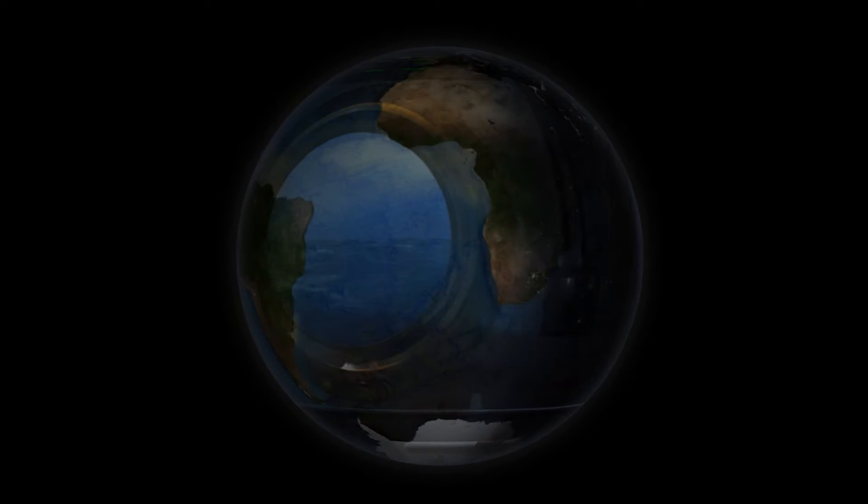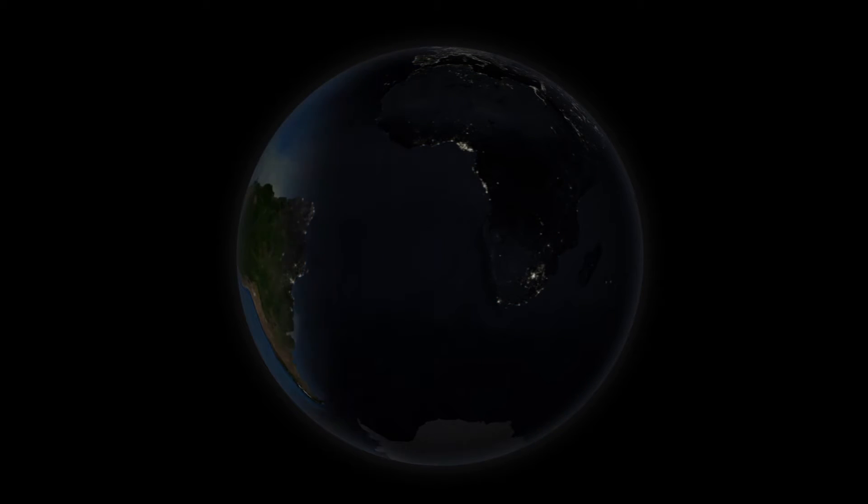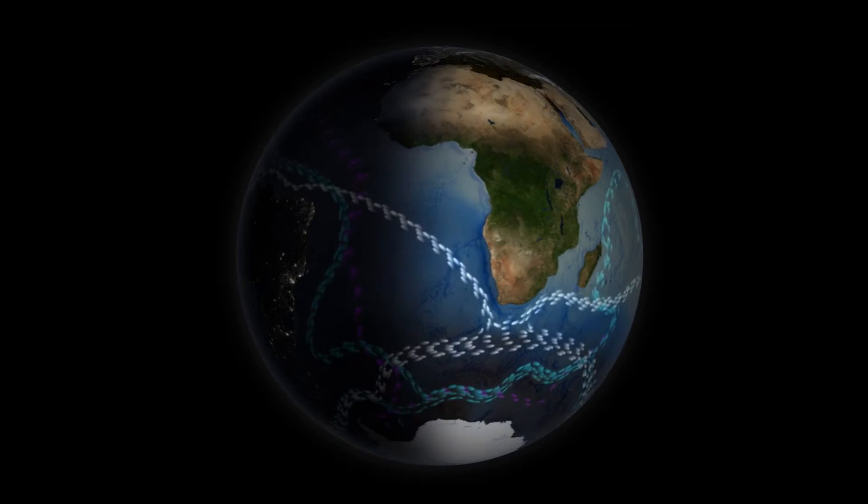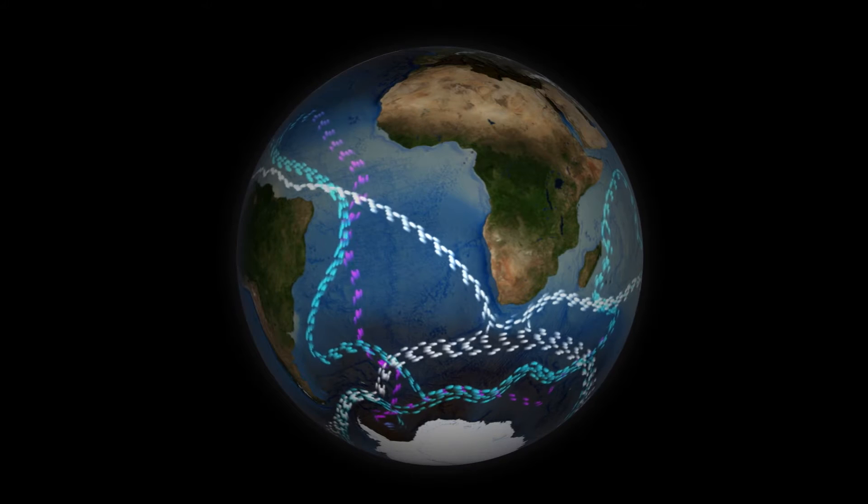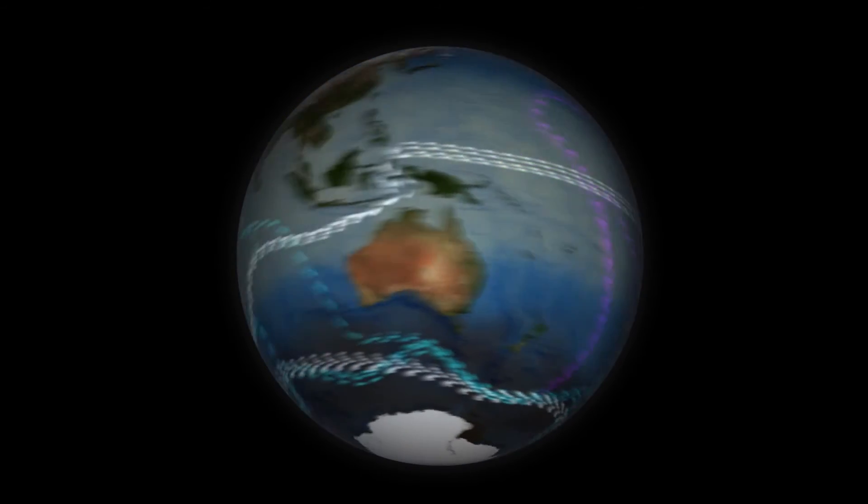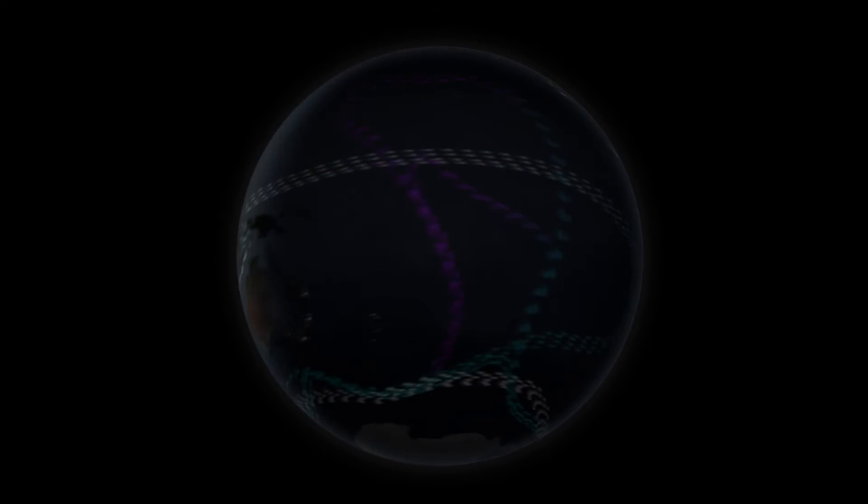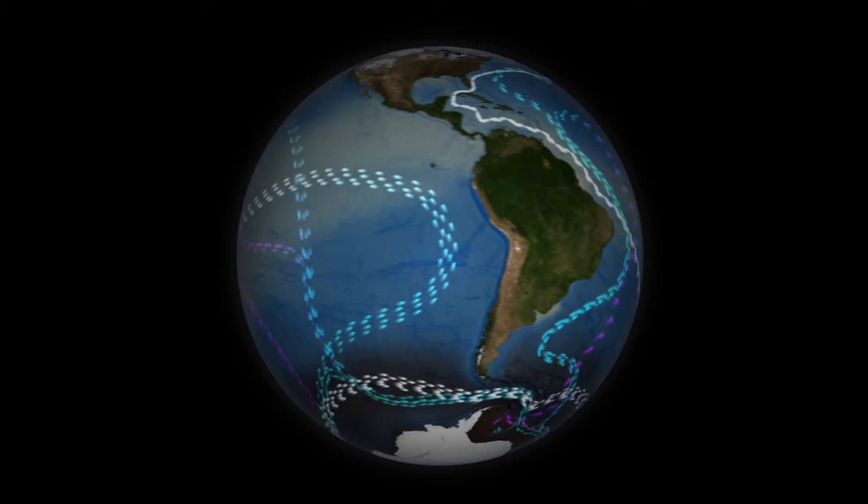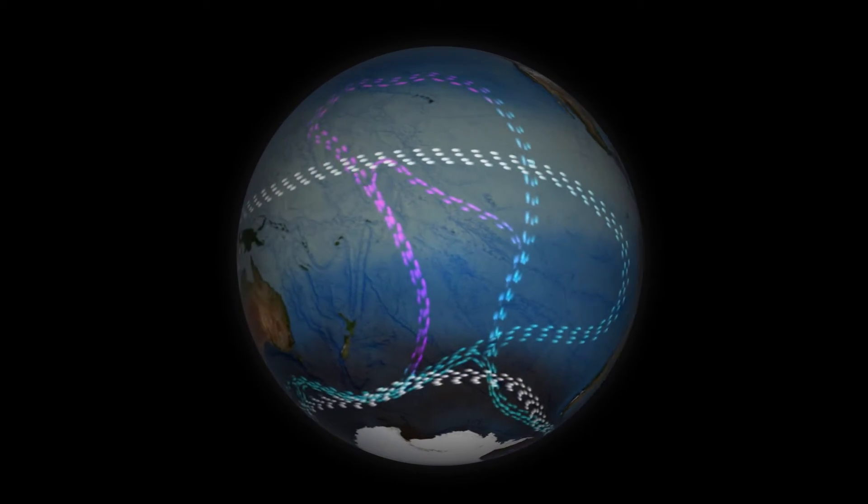So what do we have? We have sunlight warming some parts of the planet more than others. We have different densities of water on an enormous global conveyor belt. And of course, we have a rotating planet. So it should be no surprise to see a wide range of temperatures on the ocean's surface. Like this.